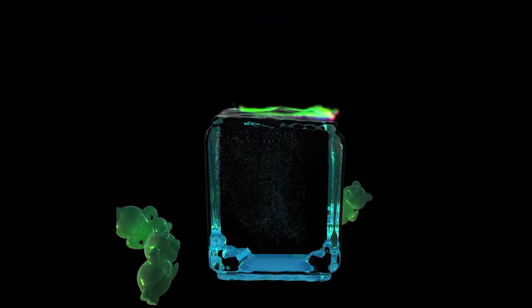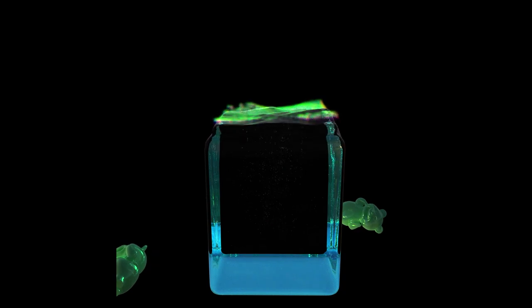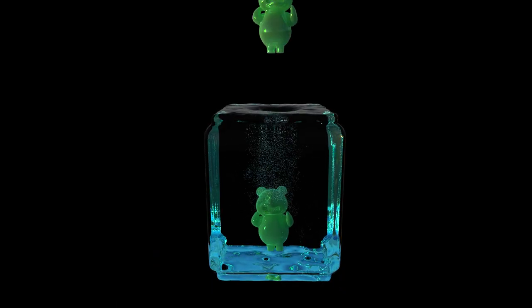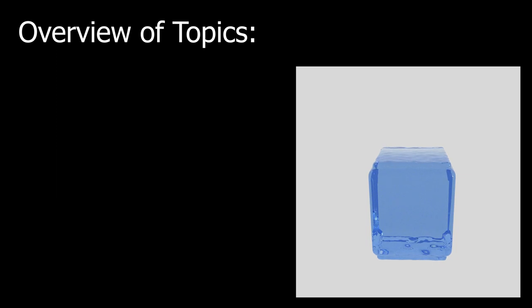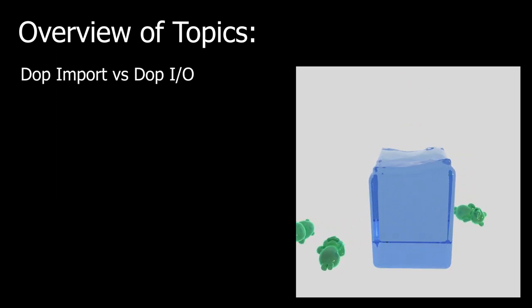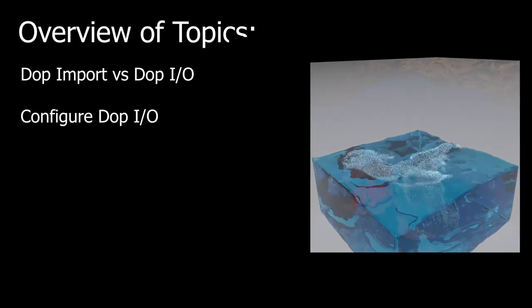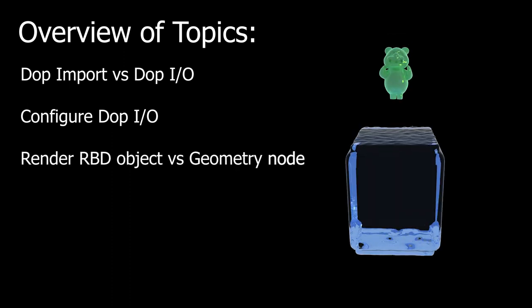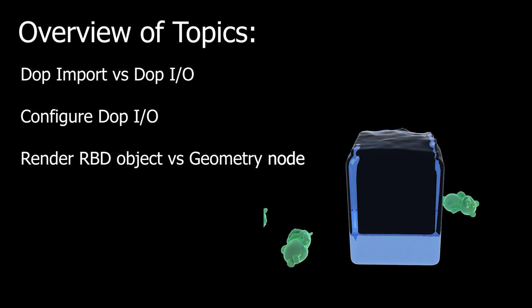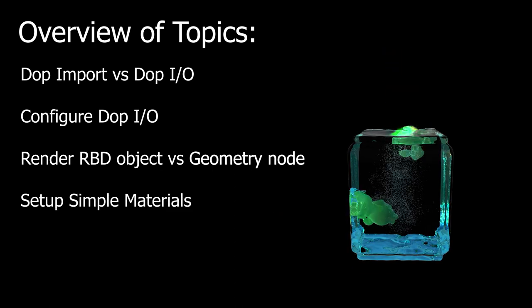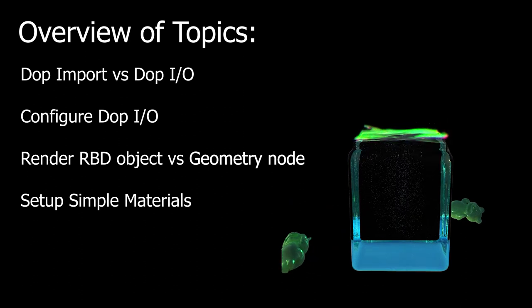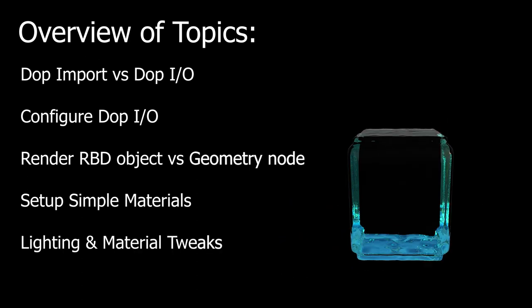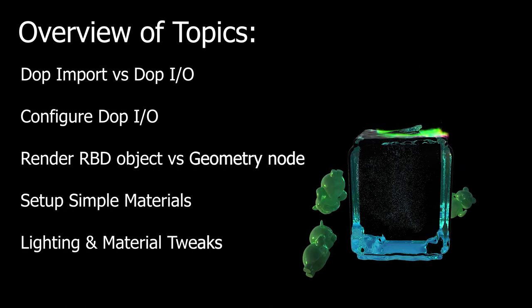In this video, I demonstrate how to set up your scene to render out a simple flip simulation, focusing mainly on how to extract different types of data from the simulation using different DOP import nodes. I'll discuss the difference between a DOP import node and DOP IO node, and then show you how to configure the DOP IO node to prep the scene to render the flip tank fluid. Then I'll explain why we need to render the RBD object from the simulation instead of using the original geometry node. Last, I quickly set up some simple materials and assign them to the respective geometries — the water and the teddy bear. Then I go over the lighting conditions and how to tweak the materials so you can get the same look as I did in this animation.